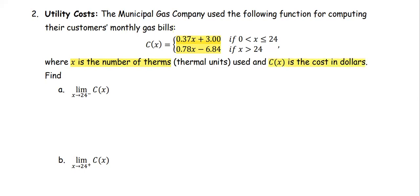In part A, we're going to find the limit of the cost as x approaches 24 from the left. In part B, we're going to find the limit of the cost as x approaches 24 from the right.